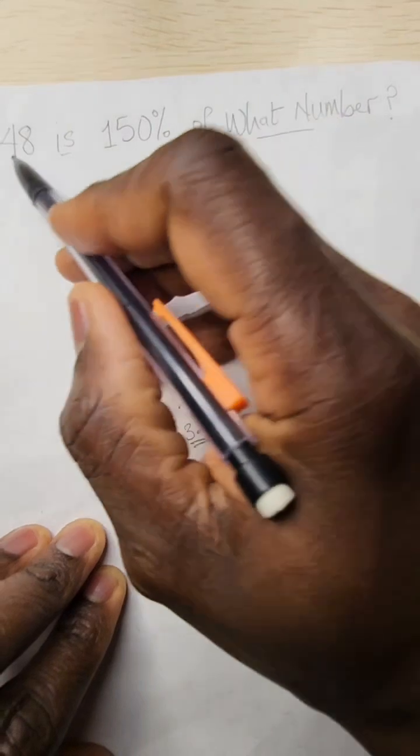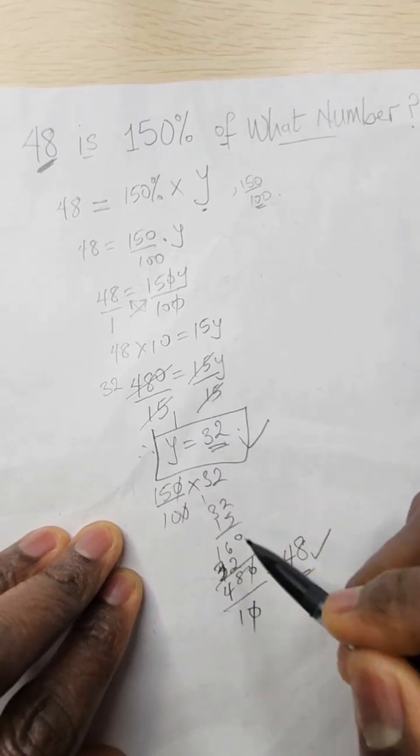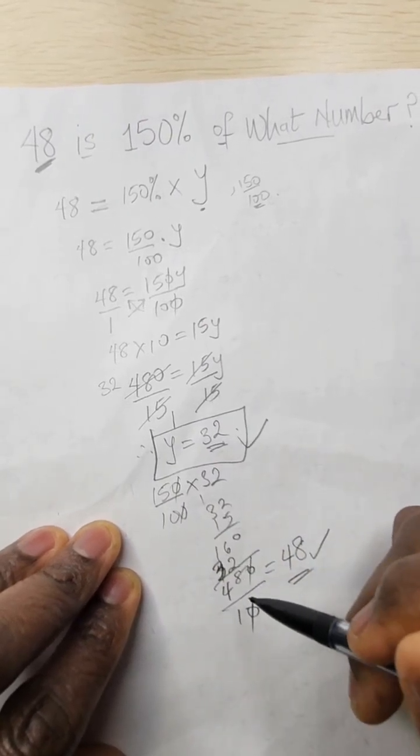That's the proof because we have 48 right there. So y equals 32 is correct.